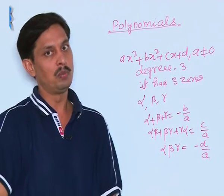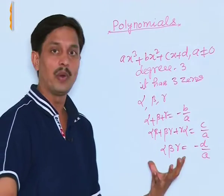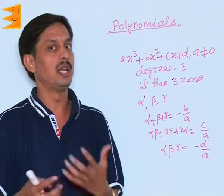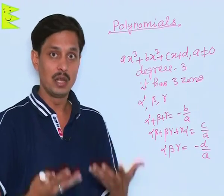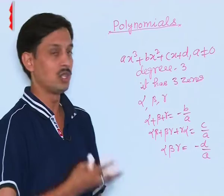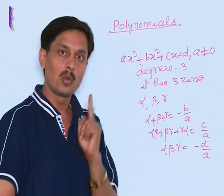If any cubic polynomial is given, then you can find or verify the relation between zeros and coefficients. Similarly, as you have been doing the verification problems for quadratic polynomials.